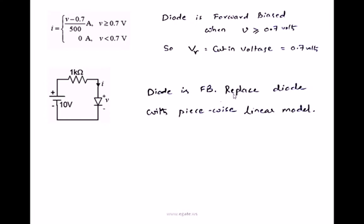In piecewise linear model, the diode consists of a voltage source, that is threshold voltage or cut-in voltage, along with forward resistance. So diode will consist of two parameters: one is cut-in voltage, the other is forward resistance.